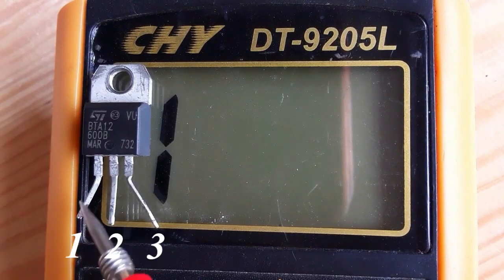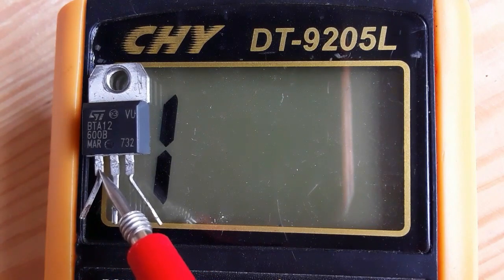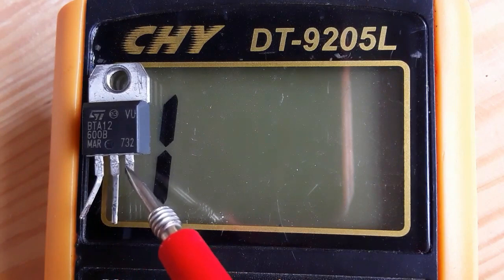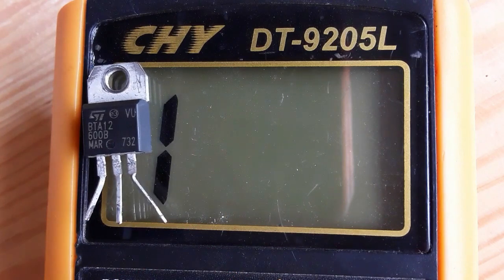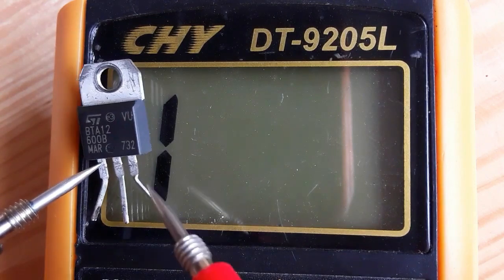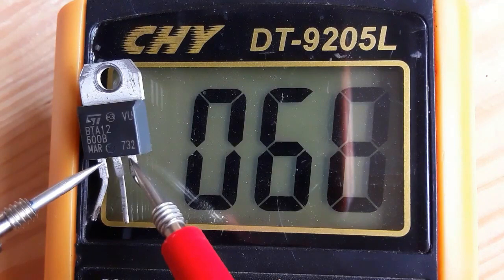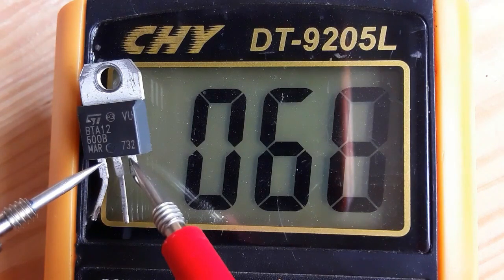So, between pin number 1 and pin number 3 or anode 1, we should get about 0.70 in the multimeter. Of course, if you get 0.60 or 0.50, no problem. The same. So, let's check. We have about 0.68 means this is a good TRIAC.